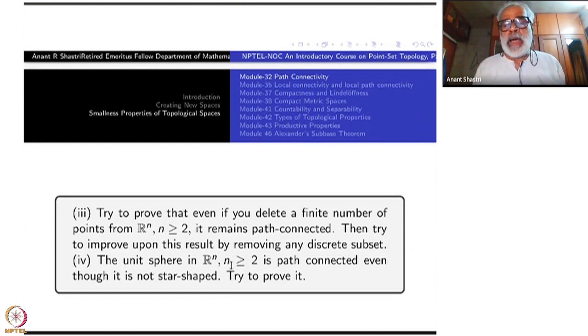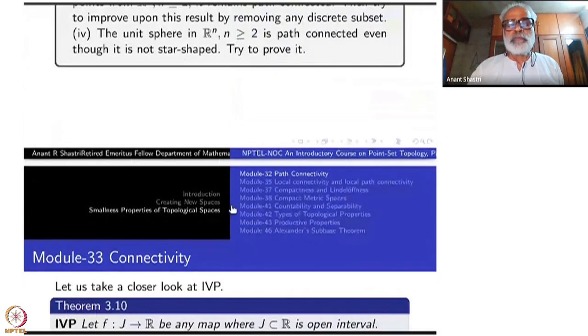Similarly, the unit sphere in R^n, n greater than or equal to 2, n equals 2 it is the circle, n equals 3 it is the two sphere, they are all path connected even though they are not star shape. How do you show that circle is path connected? You can use the restricted parameterization. But when you go to the two sphere, how do you do that? Think about these things. These are completely geometric and it's like an extension of your study of calculus.